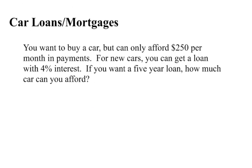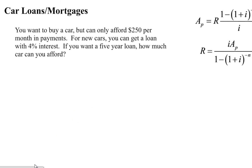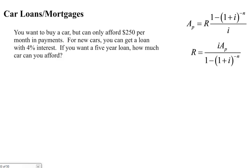So what we're going to first do is say what we know. We know that R is $250 because that's how much we can pay per month. We know that N is 5 times 12 which is 60, so there's 60 payments. And we know that I is .04 divided by 12 which is one-third percent per month.